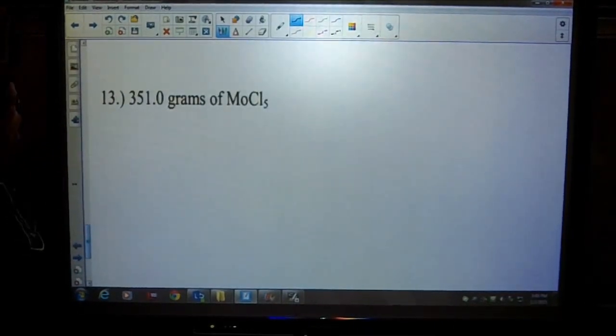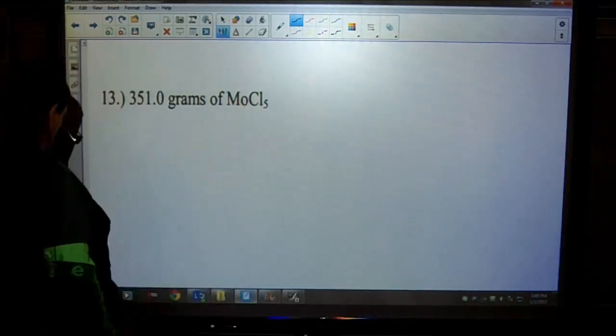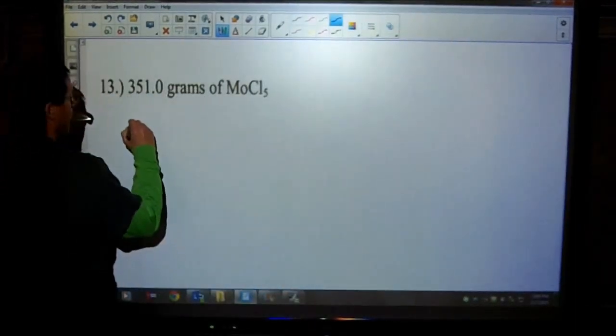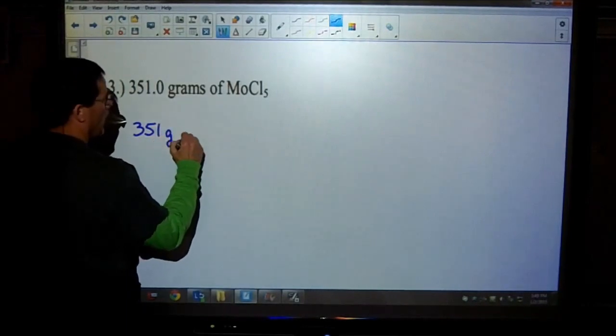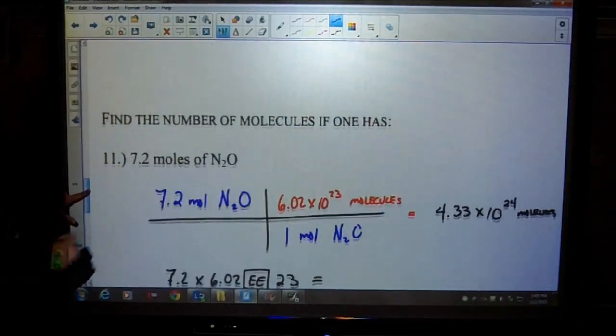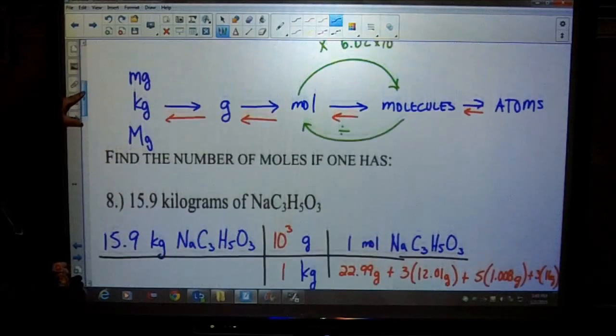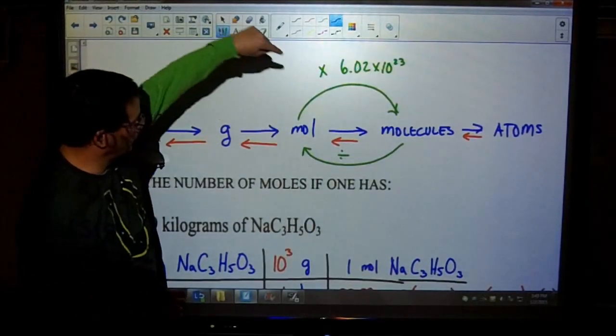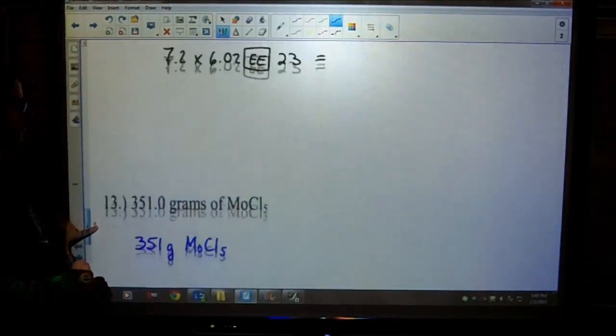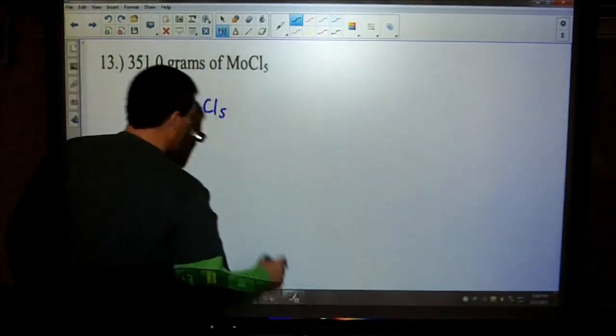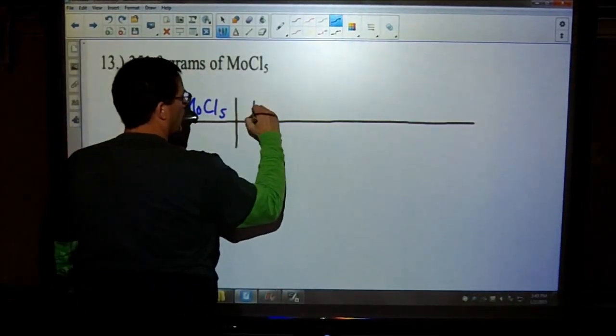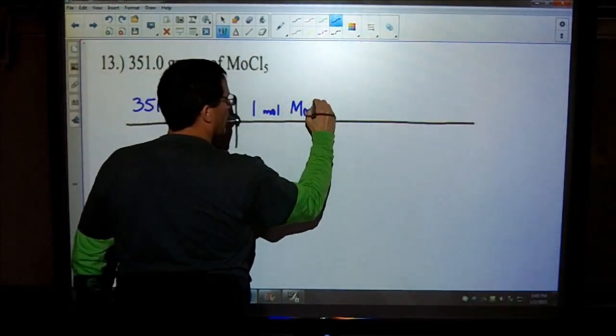Here we have 351.0 grams of molybdenum Roman numeral 5 chloride. Start off with what you know. 351 grams of MOCl5. We're going to molecules. So if we start off with grams, that means I need to change my grams into moles, then change my moles into molecules. Make sure you're doing that stepwise progression correctly. The first thing we need to do is do our conversion.